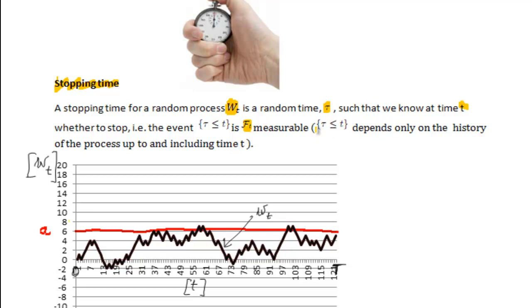So in brackets here, this event, the fact that stopping time occurred before or at time t, say t is now, depends only on the history of the process up to and including time t.